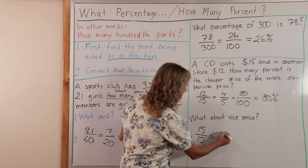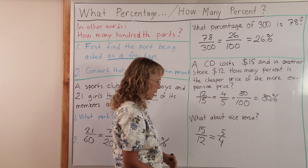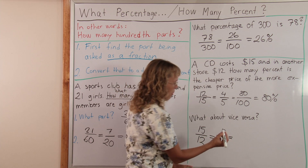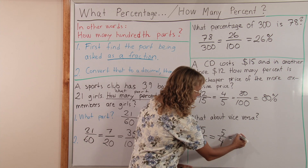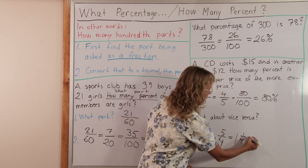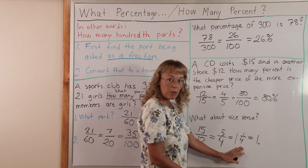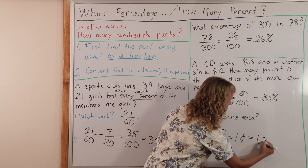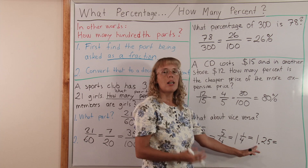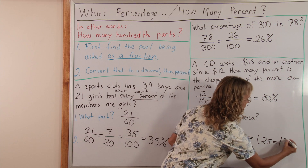I can simplify 15 over 12 and get 5 over 4. To convert this to a percent, I'll change it to a decimal first. In between, I'll write it as a mixed number: 1 and 1 fourth. As a decimal, 1 fourth is 0.25, so this is 1.25. And now as a percent: 1 would be 100% and 0.25 would be 25%, so this is 125%.